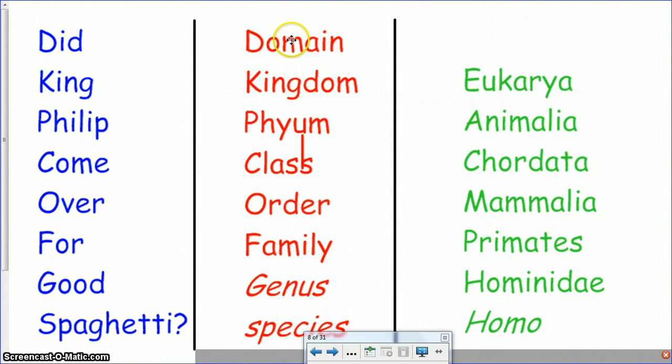For example, domain is at the top because domain is the most encompassing and species at the bottom is because it's the most specific. So the way that it works out is that there's many species in a genus and there's many genuses in a family. There's many families that make up an order. There's many orders that make up a class. There's very many classes that make up a phylum. And there are many phylum that make up a kingdom.